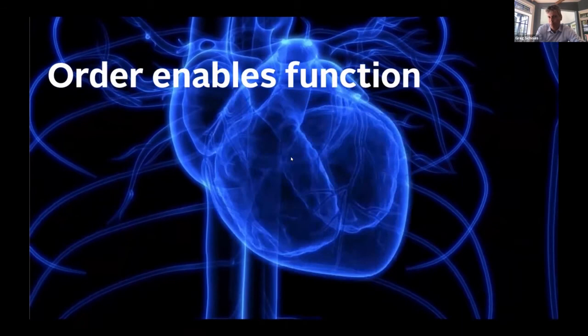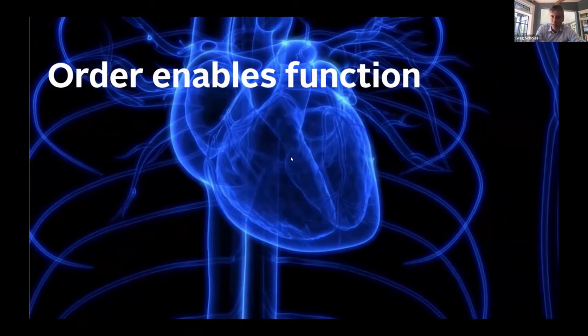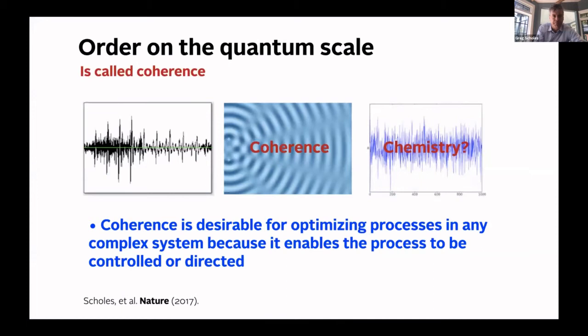This brings to mind the idea of using order or coherence to enable function. All the cells in the heart, for instance, if they fired stochastically — which is the basis of transition state theory — the heart wouldn't be able to beat periodically, and this would clearly be a problem. But to synchronize them, we get a completely new function at the ensemble level. The question is, are there ways that electron transfer reactions can use this coherence?